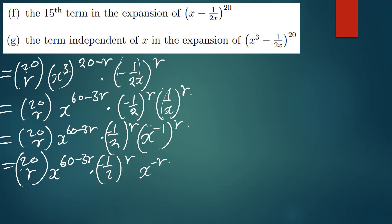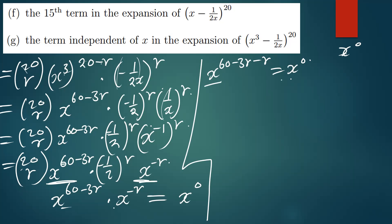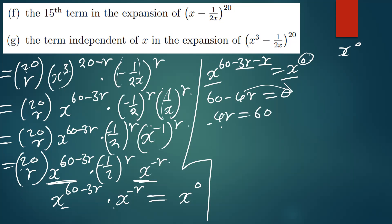We take the x parts — x to the 60 minus 3r times x to the negative r — and equate to x to the power zero, since we want the term independent of x. Adding the powers: 60 minus 3r minus r equals 0, so 60 minus 4r equals 0. This gives 4r equals 60, and dividing by 4, r equals 15. So at the term independent of x, the value of r is 15.